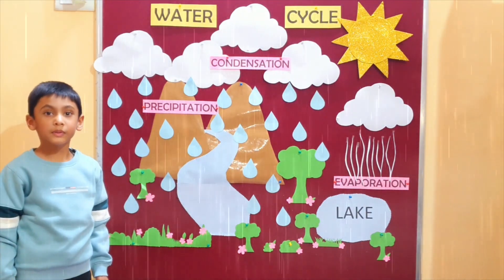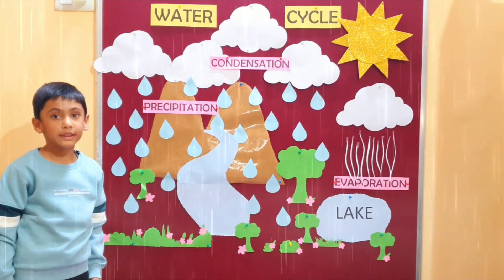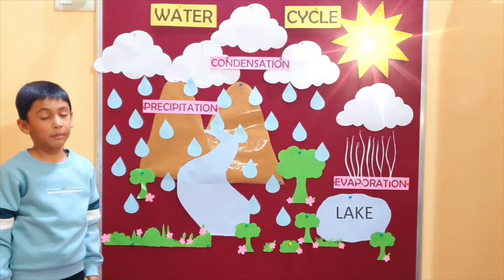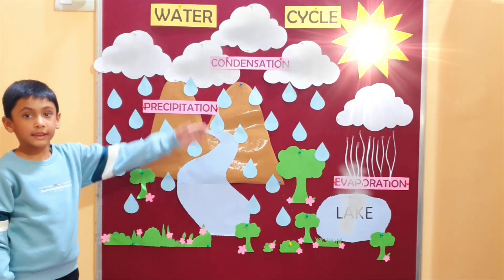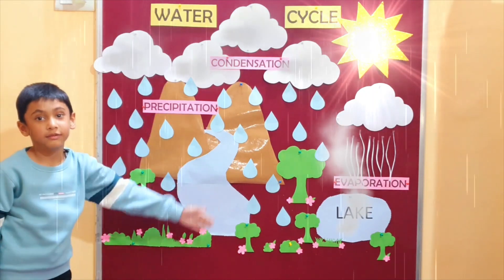Rain drops fall on the ground surface and the whole process is repeated again. This process is called water cycle.